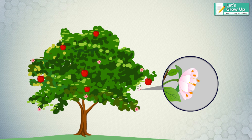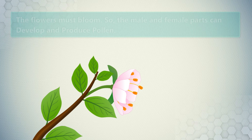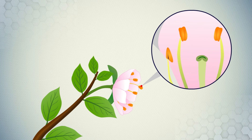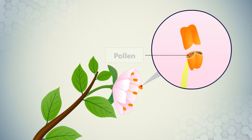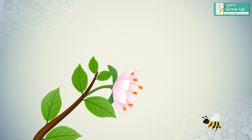The next step is flower to fruit. Before a fruit forms, the flowers must bloom so the male and female parts can develop and produce pollen. In most flowering plants, the pollen must travel to a different plant of the same species for fertilization, called cross-fertilization. In this process, flowers can also be pollinated by bees, birds, and butterflies.